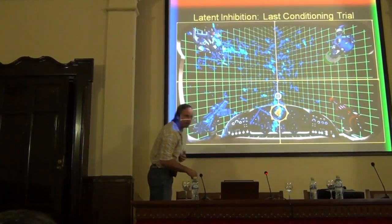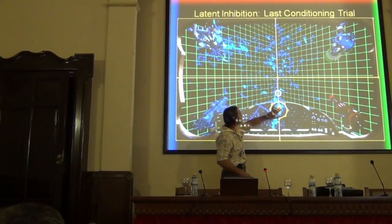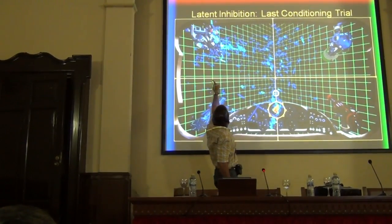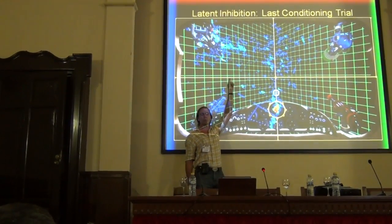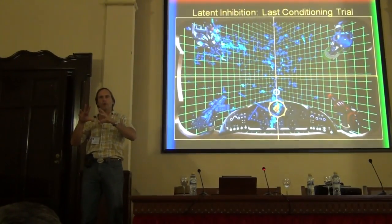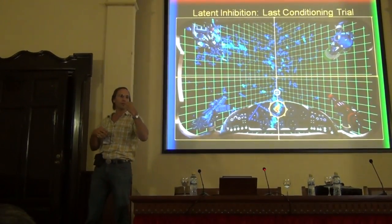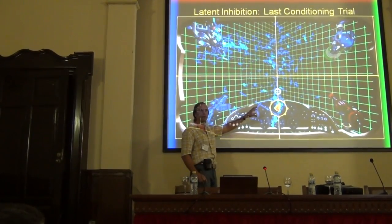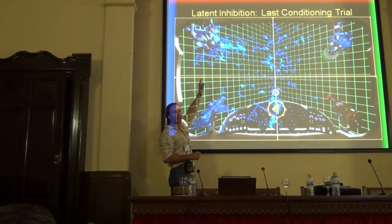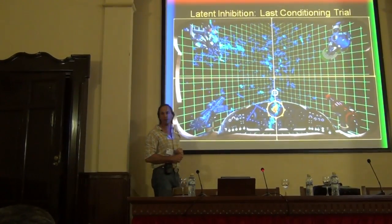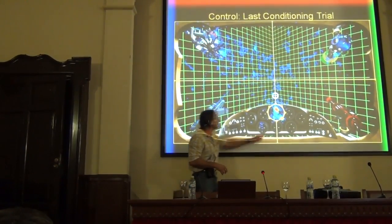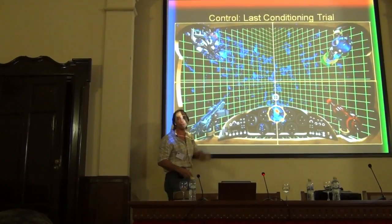By the last trial, something really interesting is occurring. The latent inhibition group is glancing down at the CS quite a bit, but when they're not looking at it, most of their gaze points are focused up in the upper left quadrant. That's particularly interesting because that is where the US appears — the US flies in from that upper left quadrant. So what we're seeing here is a new response: not only are they looking at the CS and emitting a behavioral response, they're looking in anticipation for where the US is going to appear. They're learning where the US is going to appear. And the control group is showing the same thing — they look at the CS, and they also learn to look at the area where the US is going to appear.